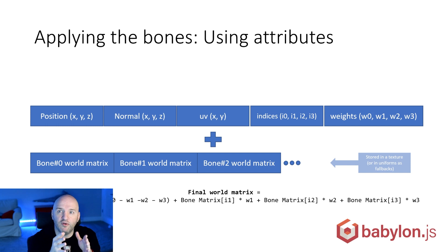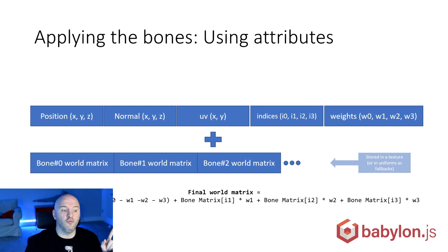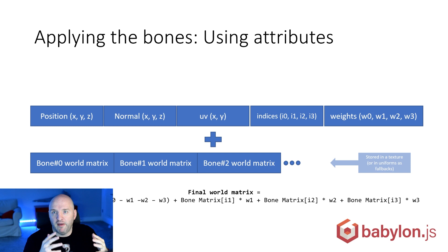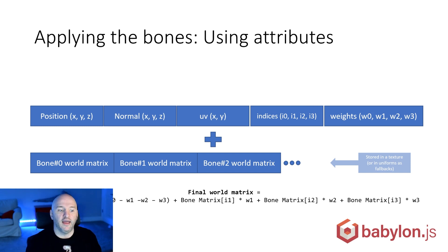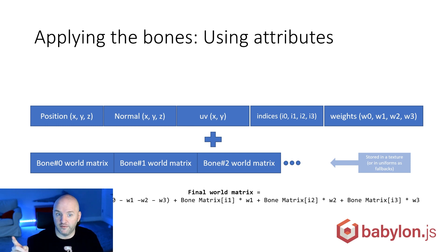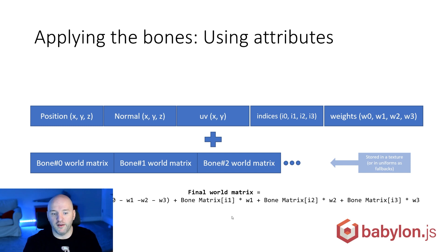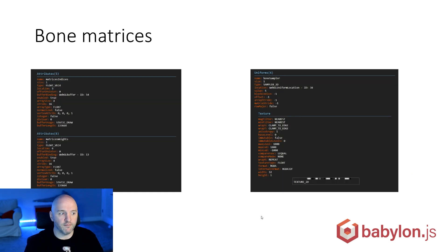The final matrices are built in the shader: it takes the default world matrix and multiplies it by one minus all the weights, then adds every single additional matrix weighted by its weight index — so matrix ID 1 multiplied by W1, etc.